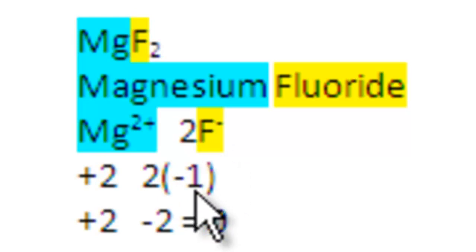So 2 fluoride ions contribute 2 negative 1 charges, which is negative 2 total. The 1 magnesium is positive 2, contributes a positive 2, and the total charges sum up to zero.